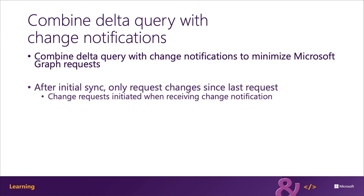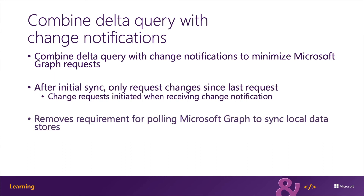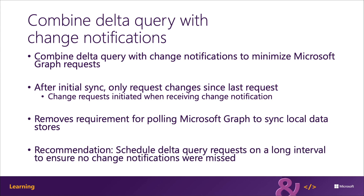The application can then use the Delta query to request all changes since the last time it made the request. Using this strategy, applications can nearly eliminate the need for frequently polling Microsoft Graph and processing these changes to keep a local user data store in sync. This greatly reduces the chances for requests to be throttled. To ensure that no changes are missed, it's recommended that you add in at least one long-interval Delta query request and not rely entirely on subscription notifications, so that all changes can be processed by the application in case a change notification was missed.